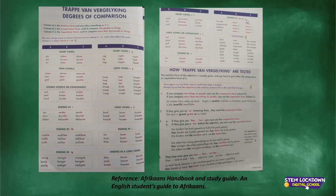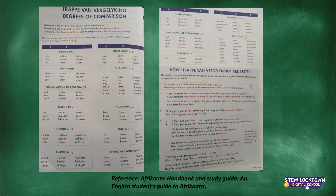If a word ends with 'de' or 'e' — like 'tevrede' or 'opgewonde' — then it gets 'meer' at the comparative: 'meer tevrede', 'meer opgewonde'. At the superlative it becomes 'mees tevrede' or 'mees opgewonde'. So whenever you see a word ending in 'de' or 'e', you know it gets 'meer' at the comparative and 'mees' at the superlative. Are you all still with me? I don't see any messages or hands up.